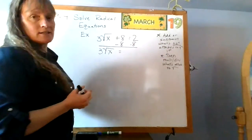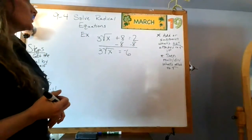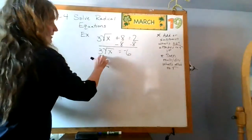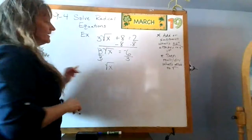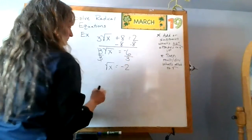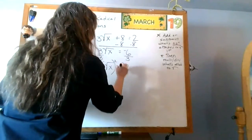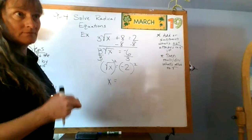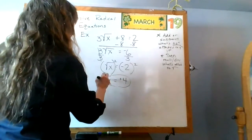I now have three times the square root of x equals two plus negative eight. Two plus negative eight: different signs, subtract — the negative eight is further from zero, so the answer is negative six. So three times the square root of x equals negative six. I still haven't isolated the radical, so I divide both sides by three. Three divided by three cancels, leaving the square root of x equals negative six divided by three, which is negative two.